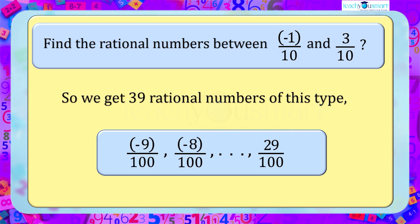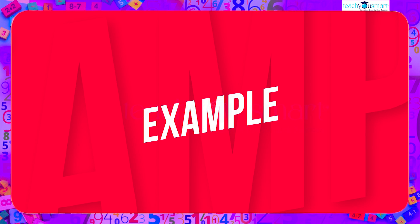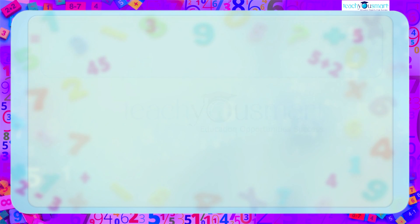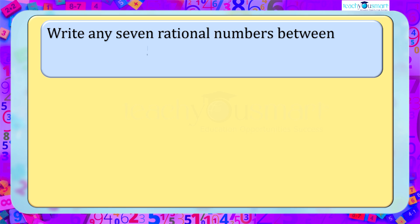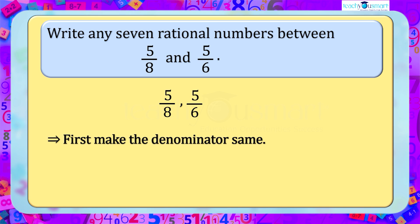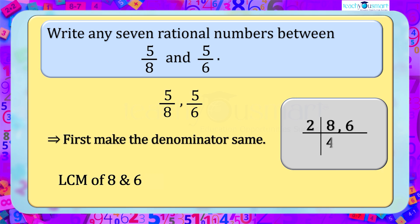Now we have seen rational numbers having the same denominator, but the denominator does not always have to be the same. Let's see such an example: write any seven rational numbers between 5 by 8 and 5 by 6. Here the previous method is not directly applicable. If the denominator is the same then we can easily find the rational numbers, so first we have to make the denominator the same. For that, take the LCM of 8 and 6, which is 2 × 4 × 3 = 24.